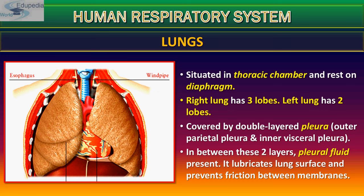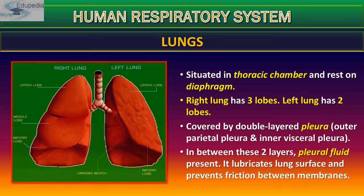The outer parietal pleura and the inner visceral pleura surround the lungs. Between these two layers, pleural fluid is present that lubricates the lung surface and prevents friction between the membranes. The right lung has three lobes: upper, middle, and inferior. The left lung has two lobes: upper lobe, cardiac notch, and inferior lobe.